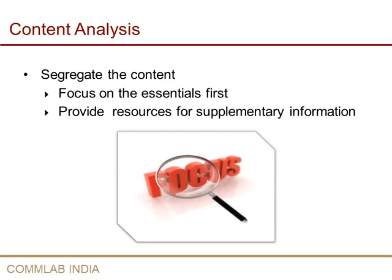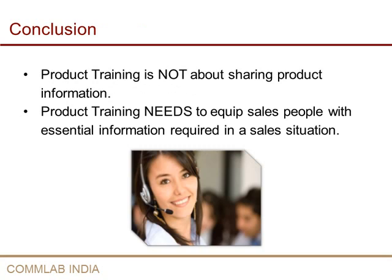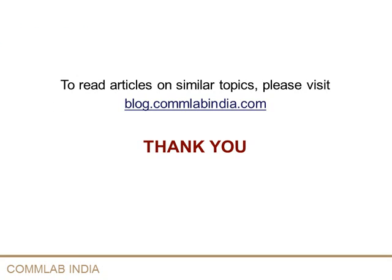Dumping too much information on salespeople will result in cognitive overload and may not have the desired impact. Therefore, you need to focus on the essential information that will directly help salespeople to sell. Supplementary information can be provided as an online resource or as handouts, PDF documents, etc. Product training is not about just sharing product information — it needs to equip salespeople with essential information required in a sales situation. To read articles on similar topics, please visit blog.comlabindia.com. Thank you.